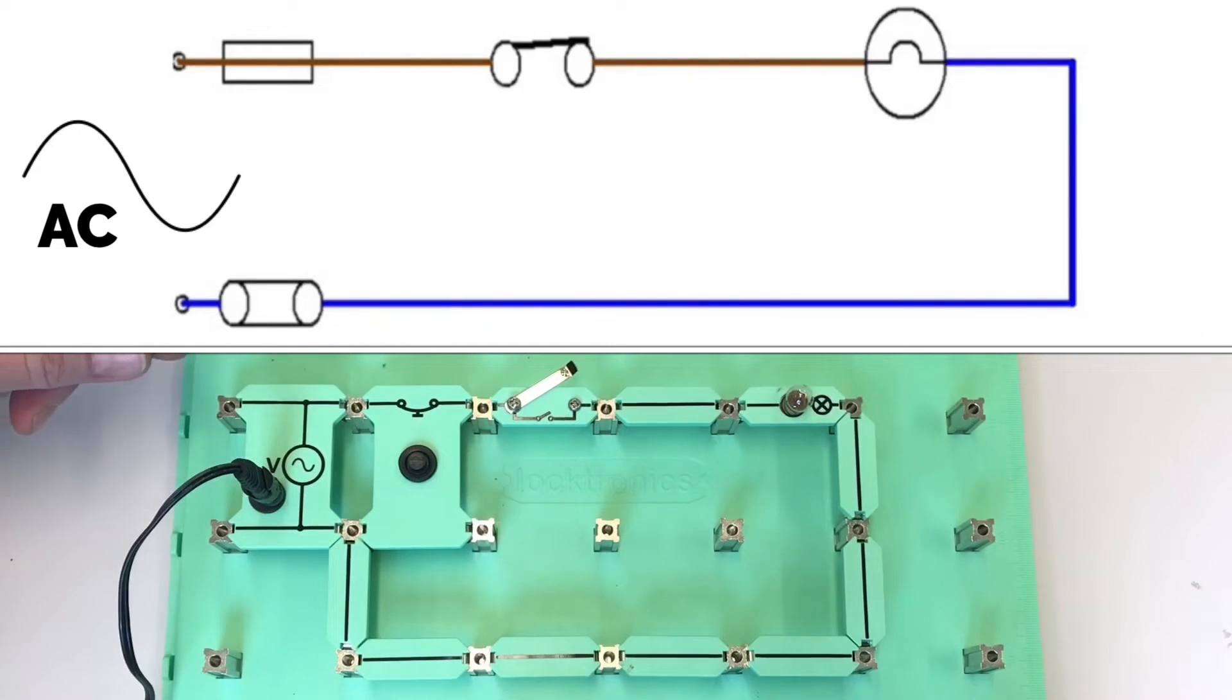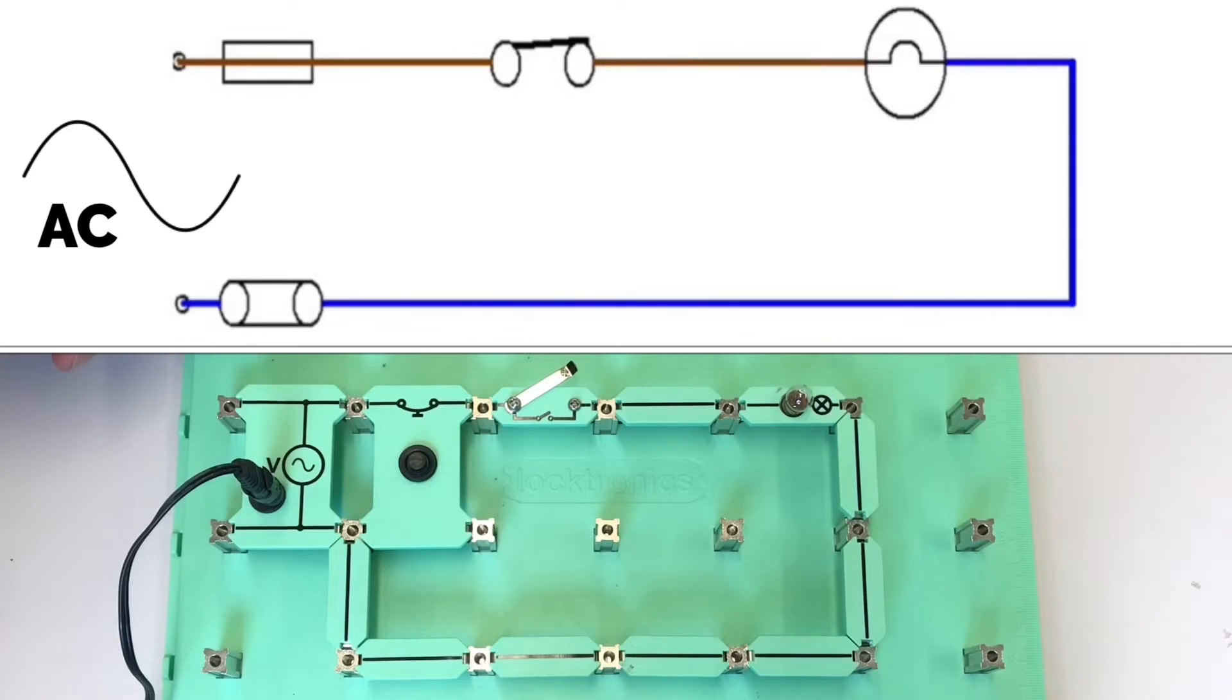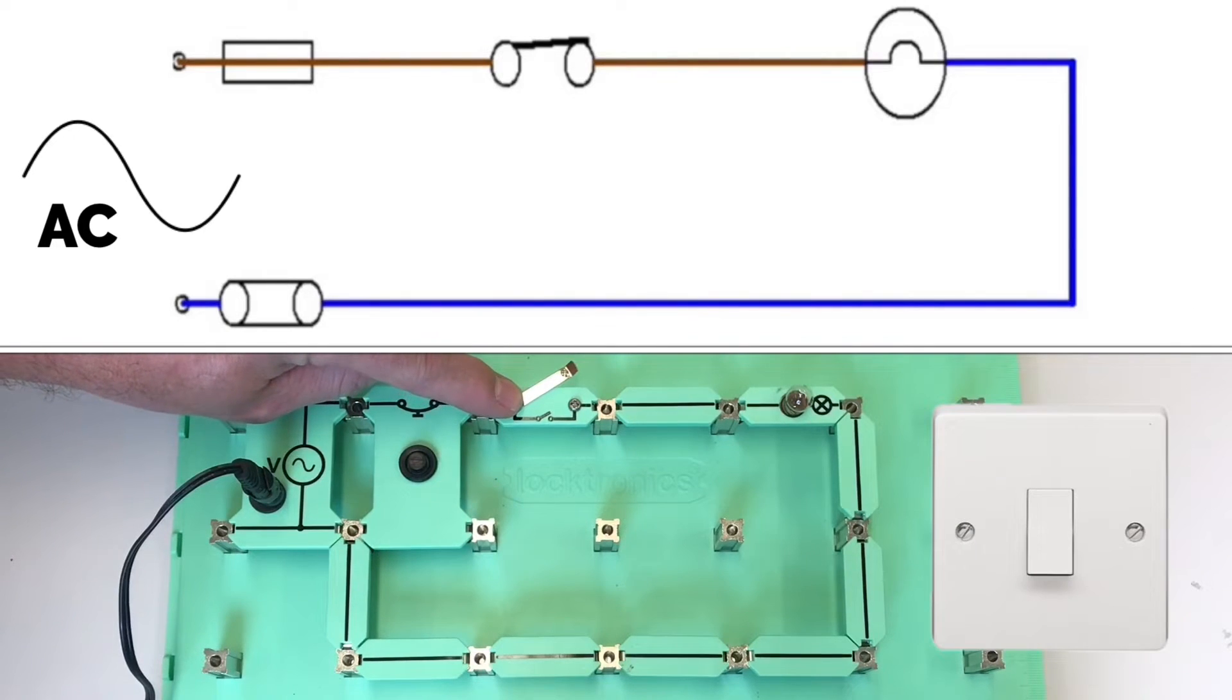Our circuit needs overcurrent protection. We have the symbol here for a circuit breaker. We also need control. Control here offered by a one-way switch, that when we close the switch and complete the circuit, the lamp will illuminate.